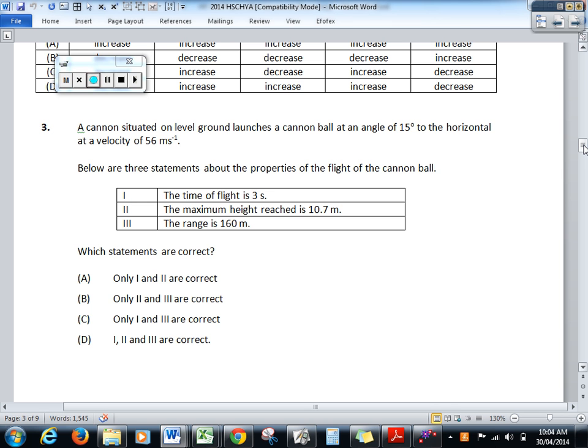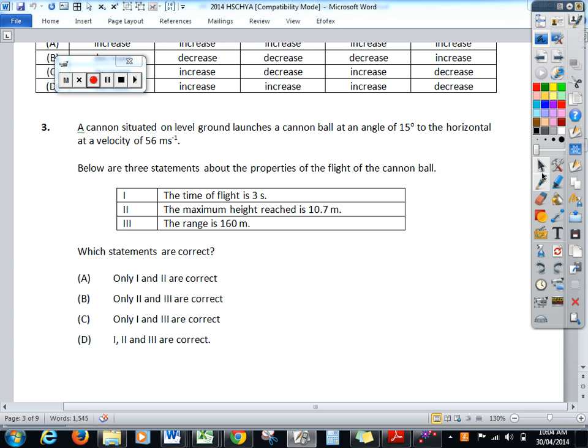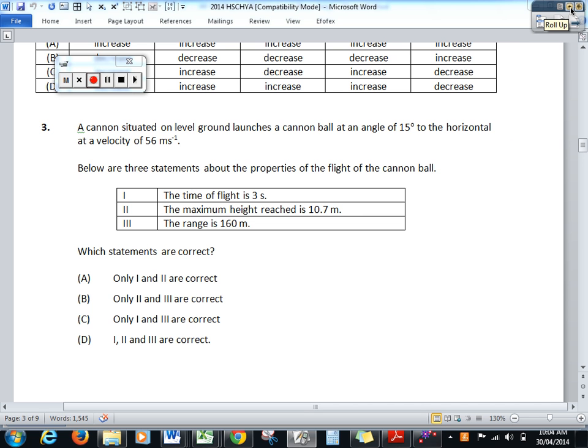The next one here. A cannon situated on level ground launches a cannonball at an angle of 15 degrees to the horizontal at a velocity of 56 m/s. There are three statements below. The time of flight is that, the maximum height is 10.7 and the range is 100. Which of the statements are correct? Well, you've got to work out all three. Hopefully we'll work out one which is rubbish straight away. We need at least two of them correct. So we've got to find one which is incorrect. Because all the options are saying at least two of them are correct.